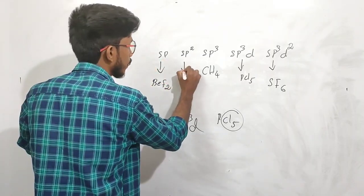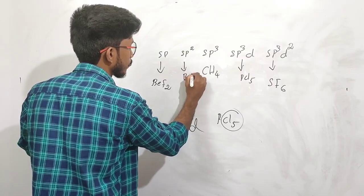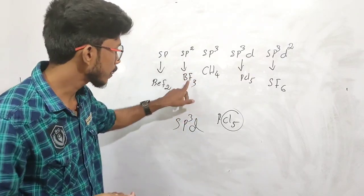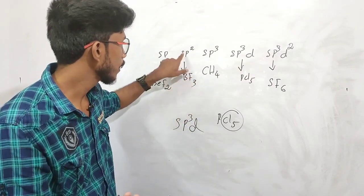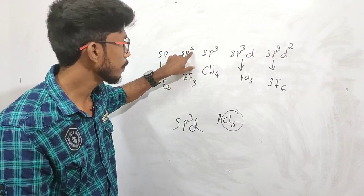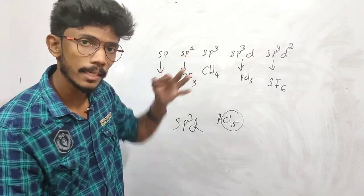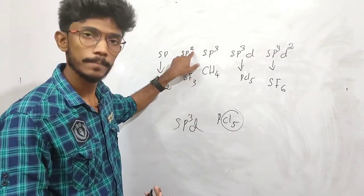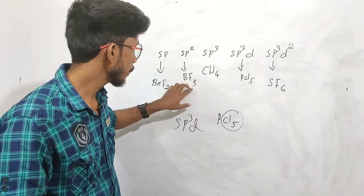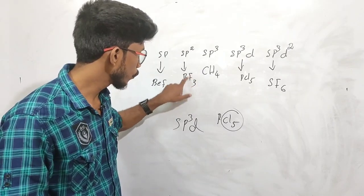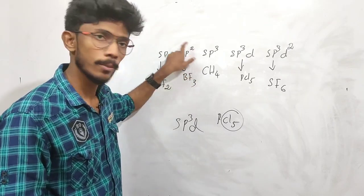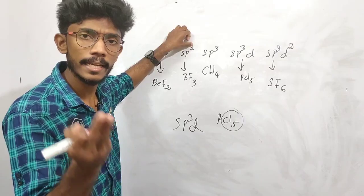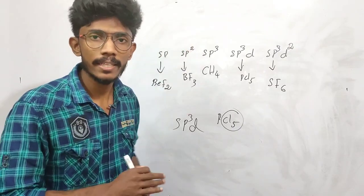We will add BF3, where there are 3 fluorines and 3 bond pairs — 1,2P — total 3. I can say BF3 is SP2 because of 3 fluorines: 1,2P, total 3.